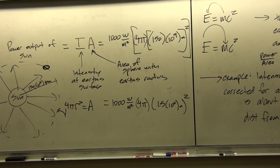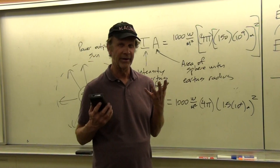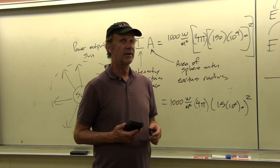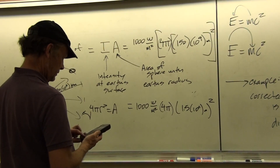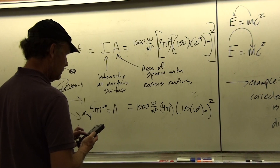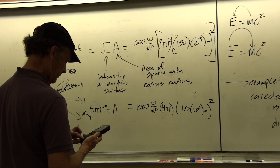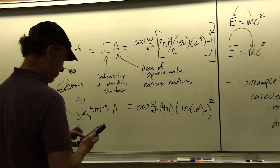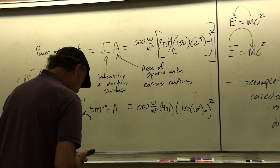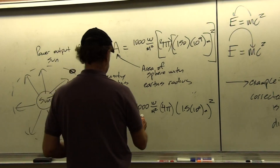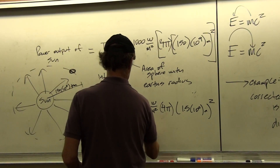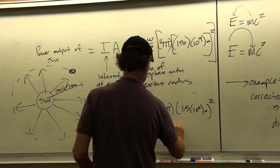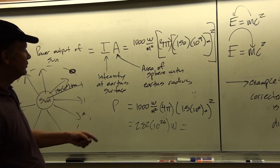Let's punch that number out. It's going to be a lot of watts — and you can expect that, because if the Sun is bright enough to burn out our eyes at 93 million miles away, it must be really, really bright. Working that out gives us 2.82 times 10 to the 26 watts, or 2.82 times 10 to the 26 joules per second. That means each second, the Sun puts out that amount of energy.